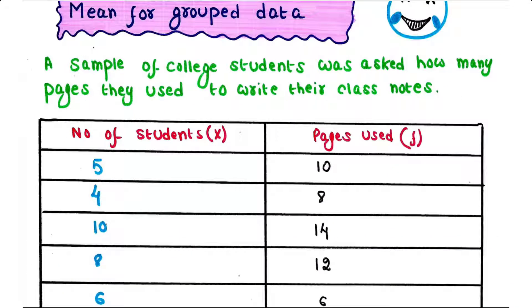Now let's calculate mean for grouped data. A sample of college students was asked how many pages they used to write their class notes. So in this column we have number of students of each group, that is represented by x. And in this group we have values which represent how many pages each group used. That is called frequency and is represented by f. Suppose among five students, each of them used 10 pages; among four students, each of them used 8 pages, like that. So here we have the chart.